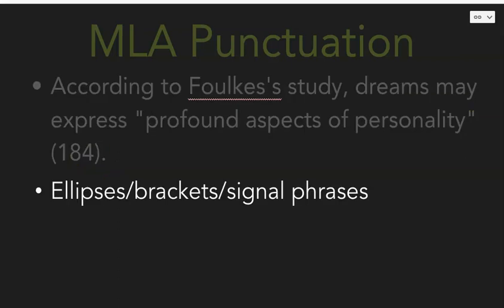Some additional punctuation to review — please write these down if you don't know them. Ellipses are the dot-dot-dot. If you see that inside a quotation, it means something was taken out. If you see something in brackets in the middle of a quotation, it means something was changed — for example, changing the tense or clarifying a pronoun. If your interview subject kept saying "I," you might add a bracket and replace it with, say, "Morgan White" or whoever.